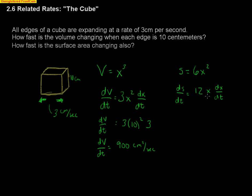And, again, hopefully we know things that we have from the previous part of this. Well, the surface area is changing at a rate of 12 times, and this was 10, and the dx/dt was 3.